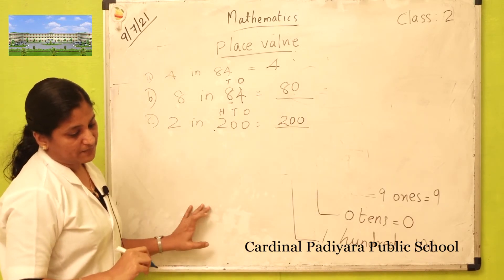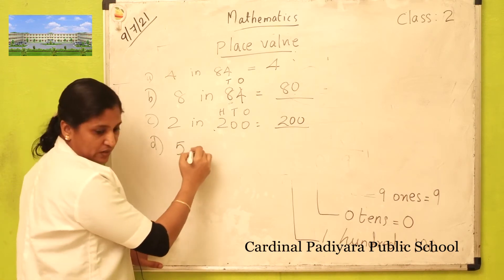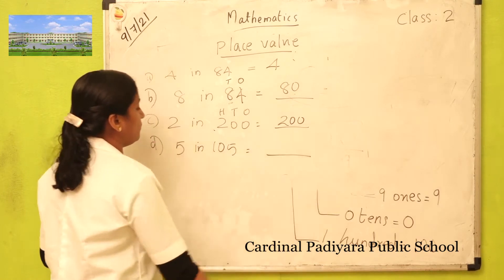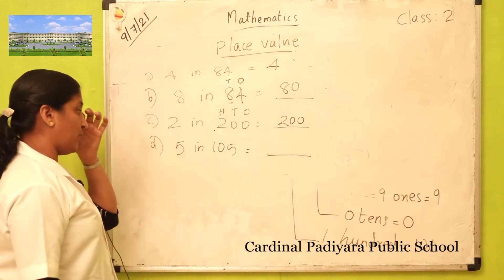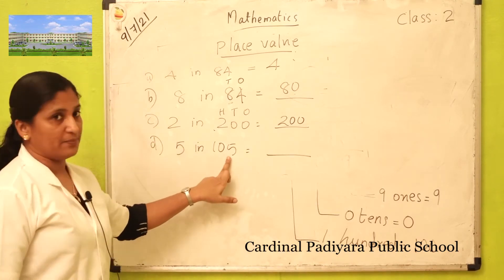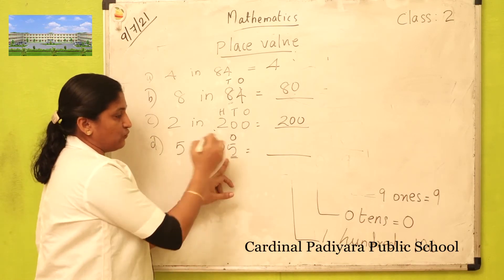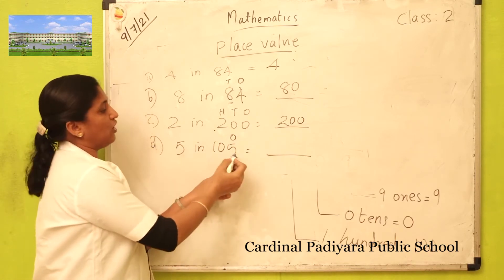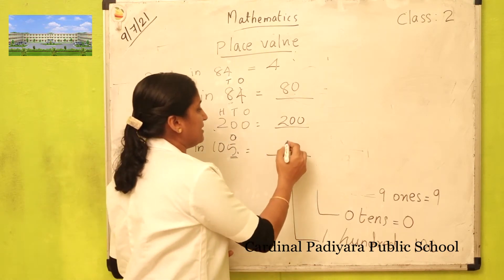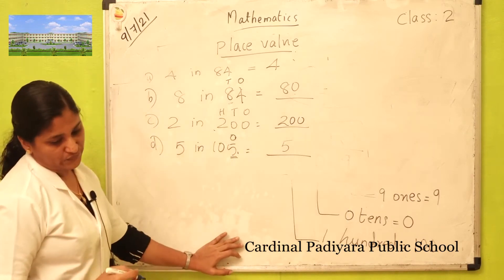Question number D: five in 105. What is the place value of five? Five is in ones place. How many ones? Five ones. Five ones is five.